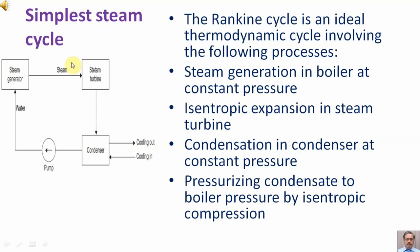The Rankine cycle involves the following processes: heat addition in the boiler at constant pressure; isentropic expansion in the steam turbine — isentropic means having the same entropy, so there is no change in entropy and no heat is added or extracted; condensation in the condenser at constant pressure; and pressurizing the condensate to boiler pressure by isentropic compression.